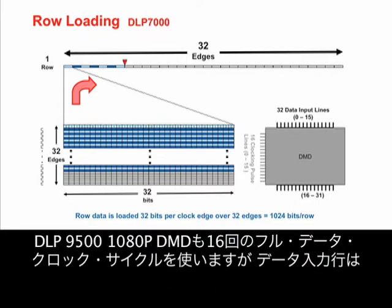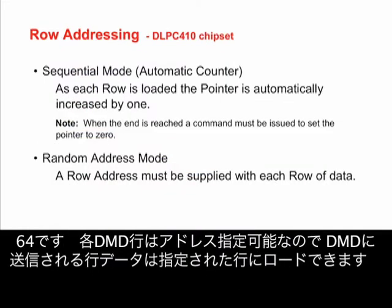The DLP 9500 1080p DMD also uses 16 full data clock cycles, but 64 parallel data input lines. Each DMD row is addressable so that the row data sent to the DMD can be loaded into the row specified.